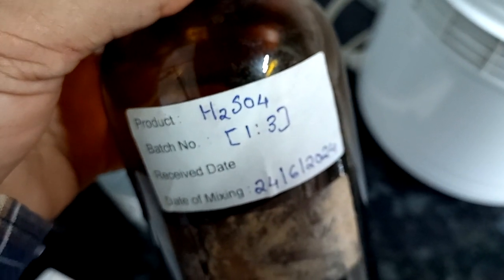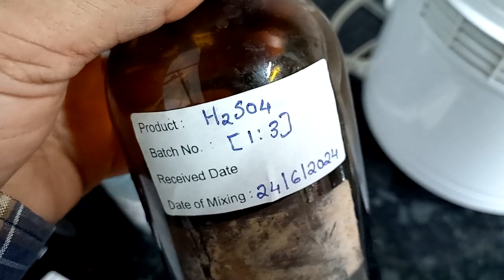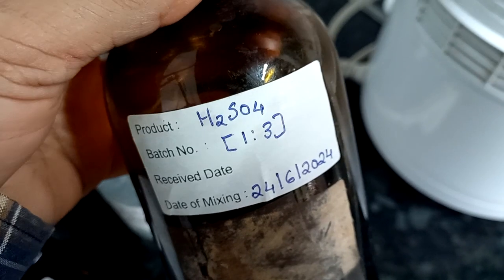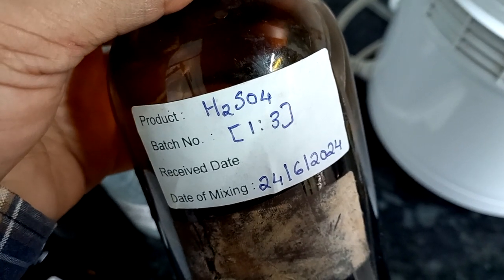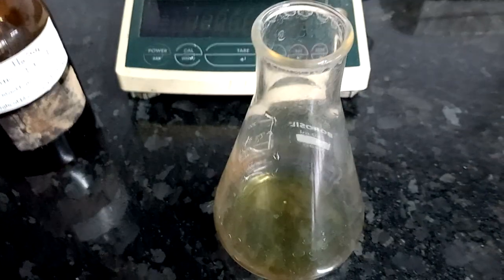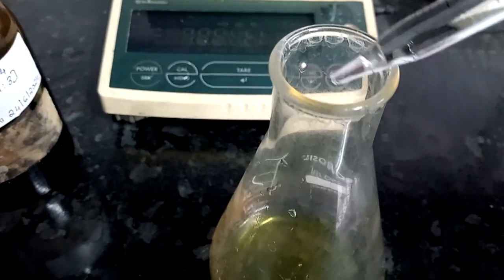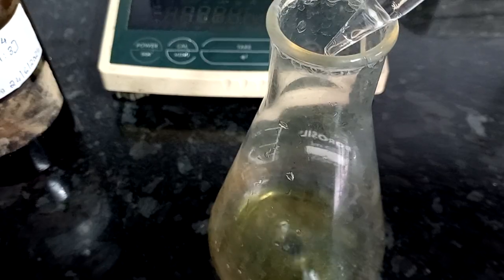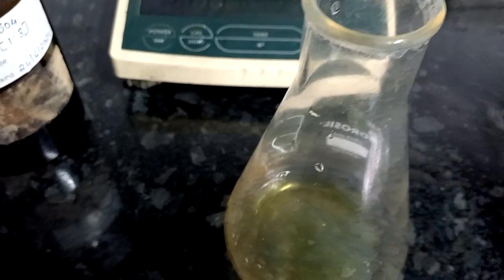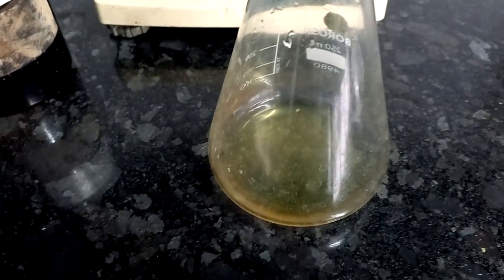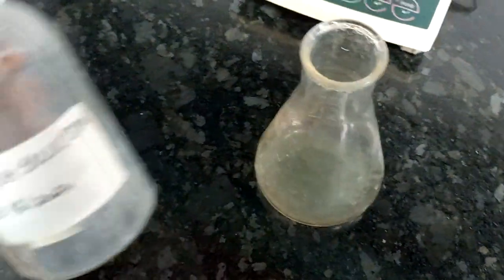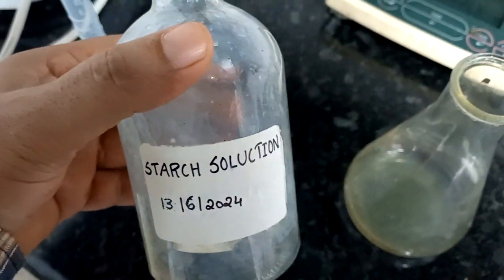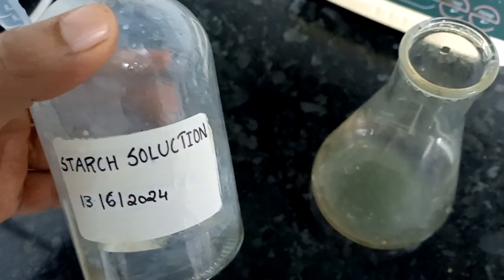Add 1 ml 1:3 H2SO4 solution into the sample solution. Shake well and add 1 to 2 drops of starch solution into the sample solution.